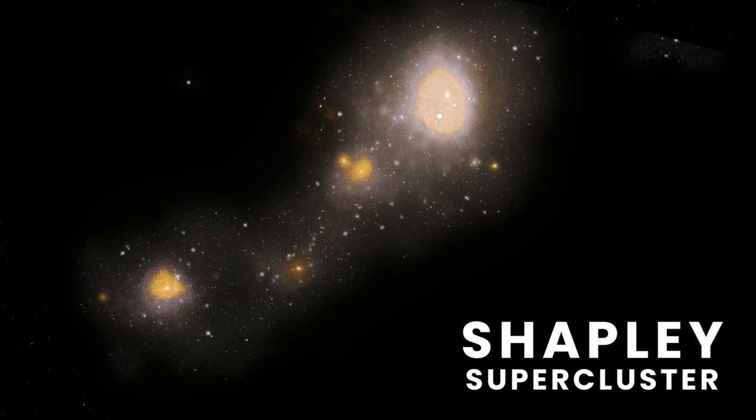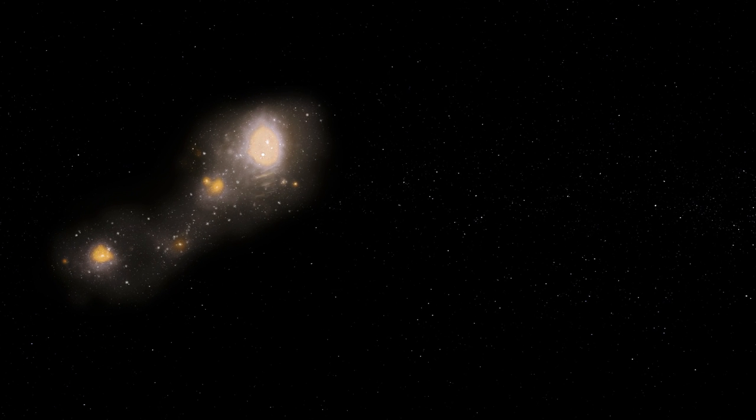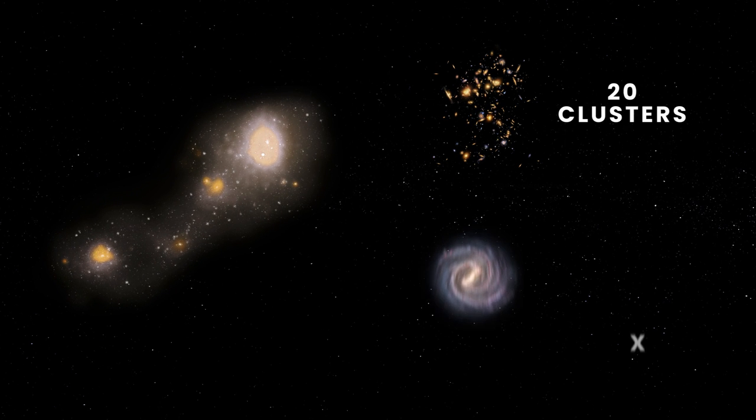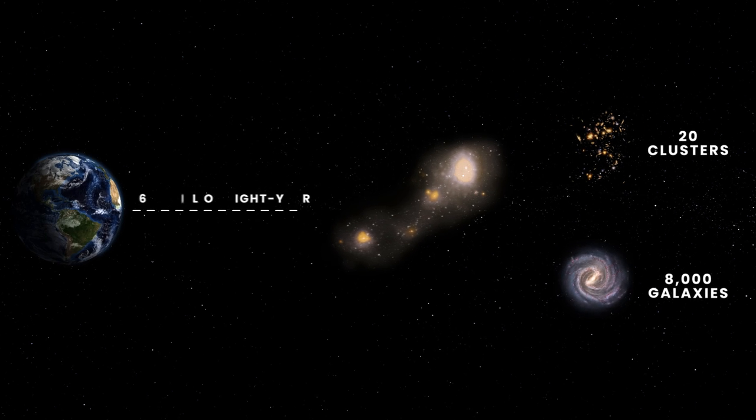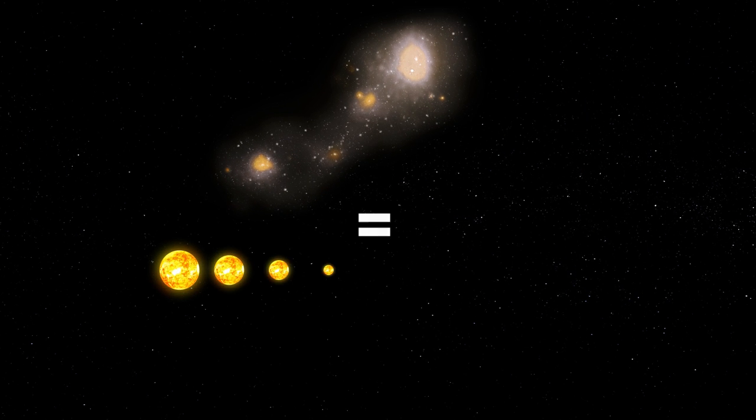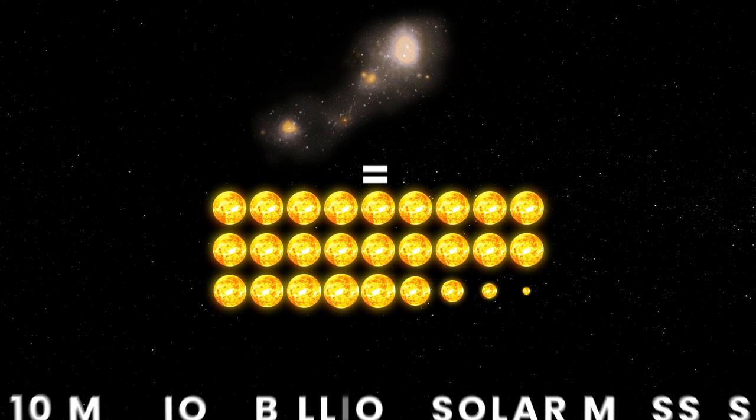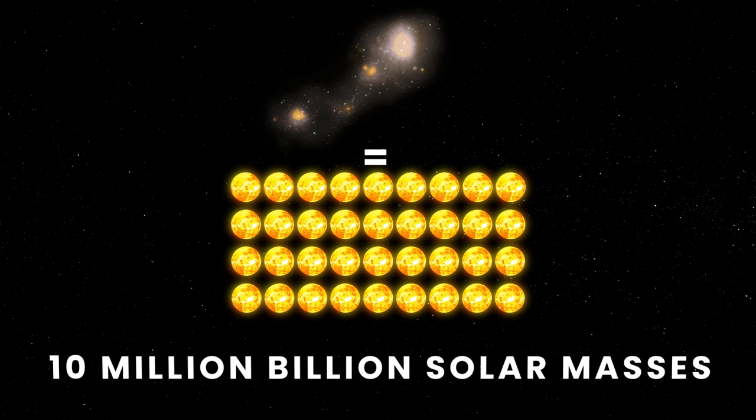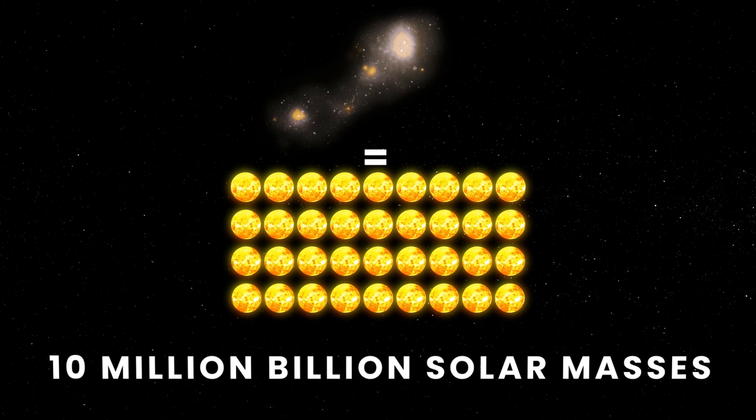This is the Shapley supercluster, a collection of approximately 20 clusters, consisting of 8,000 galaxies, about 650 million light-years from Earth. This supercluster encompasses 10 million billion solar masses. It's the most massive formation within a billion light-years from the Milky Way.